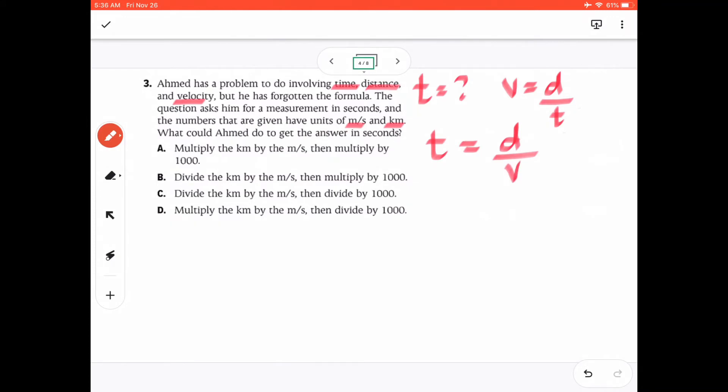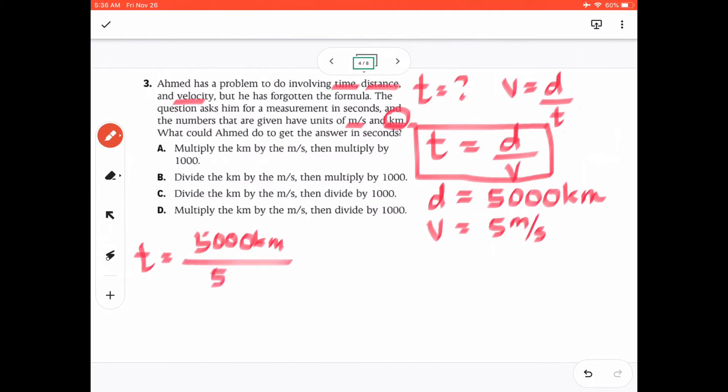Now, we don't have any given numbers, so it's safe for us to assume some numbers. Let's say that D, distance here, is 5,000 kilometers. Let's assume, because this is in kilometers, and let's say that the V is equal to 5 meters per second. Now, what are we going to do? The formula says that T is equal to D divided by V. So T is equal to D, which is 5,000 kilometers, divided by V, which is 5 meters per second. Now, if we rearrange this, it will become 5,000 kilometers multiplied to 1 second divided by 5 meters.